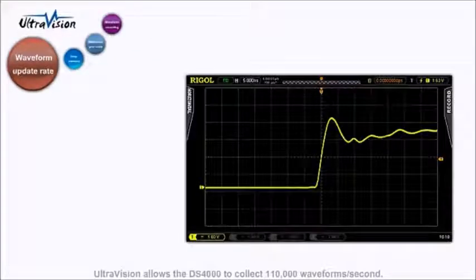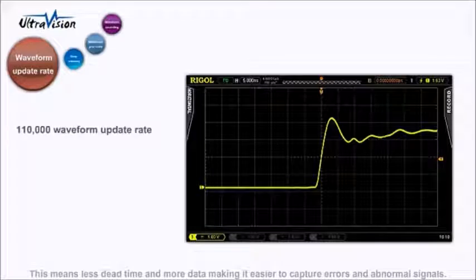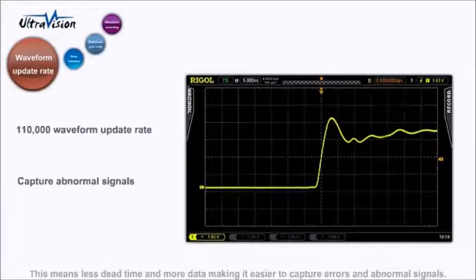UltraVision allows the DS4000 to collect up to 110,000 waveforms per second. This means less dead time and more data, making it easier to capture errors and abnormal signals.